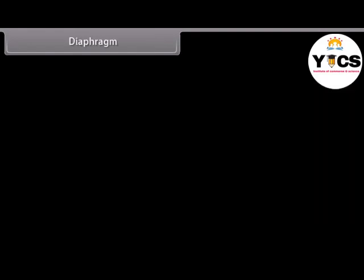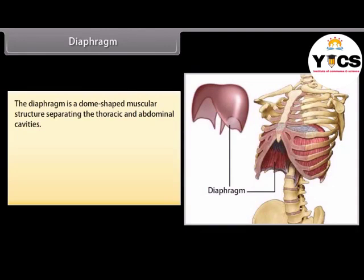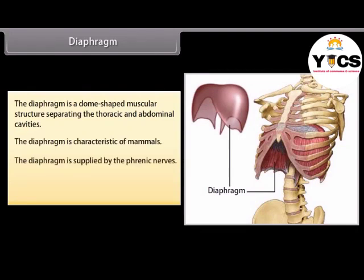The diaphragm is a dome-shaped muscular structure separating the thoracic and abdominal cavities. It is characteristic of mammals and is supplied by the phrenic nerves. Puncturing of the diaphragm results in stoppage of breathing and is fatal.